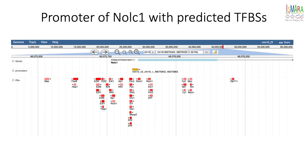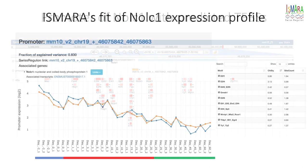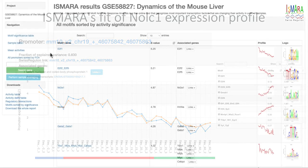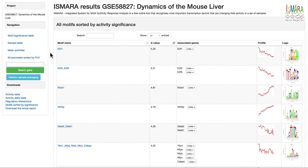Using the predicted binding sites in each promoter, ISMARA now determines motif activities for each sample so as to best fit the observed expression profile. This fitting results in predicted expression profiles for each promoter and we here see the predicted expression profile for Nolc1 in orange. On the right is a list of transcription factor motifs that contributes to this fit. We will now walk you through the main results that ISMARA provides.